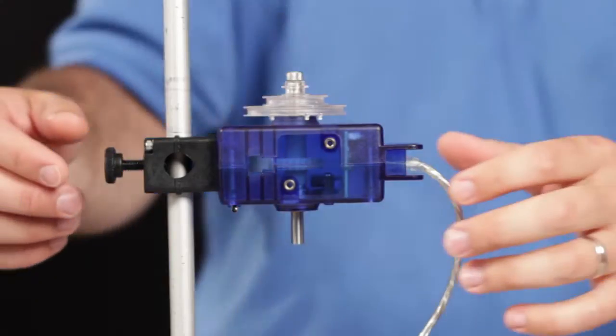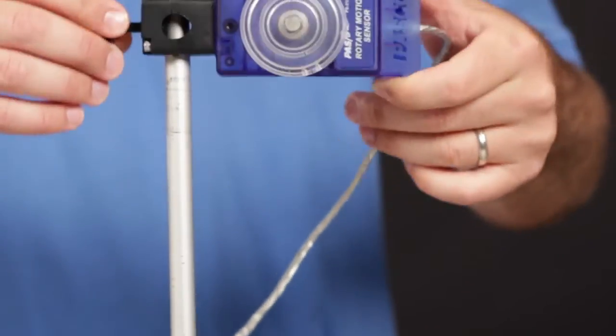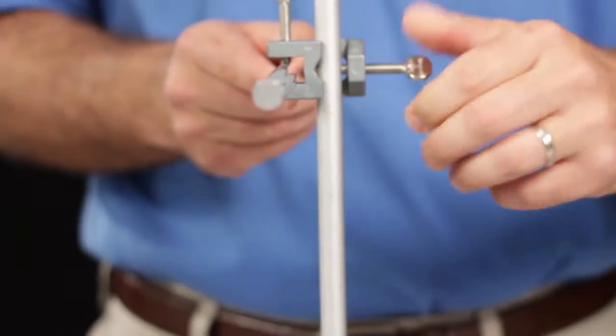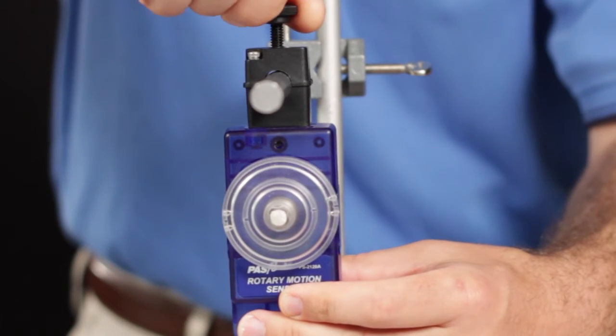Using the rod clamp, the rotary motion sensor can be mounted horizontally on a support rod, with the three-step pulley facing up or facing sideways. The sensor can also be mounted vertically with the pulley facing forward, using an additional rod and right angle clamp.